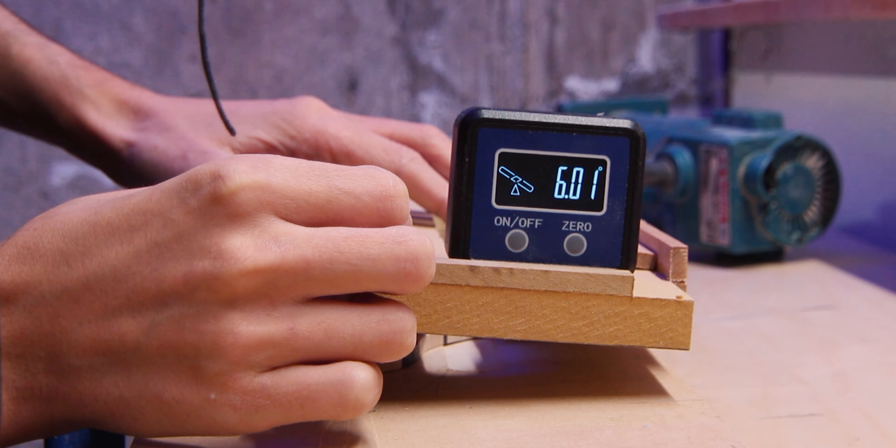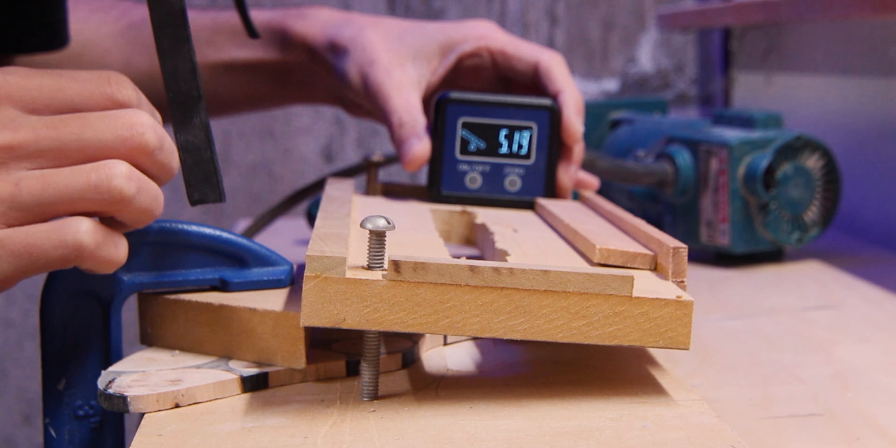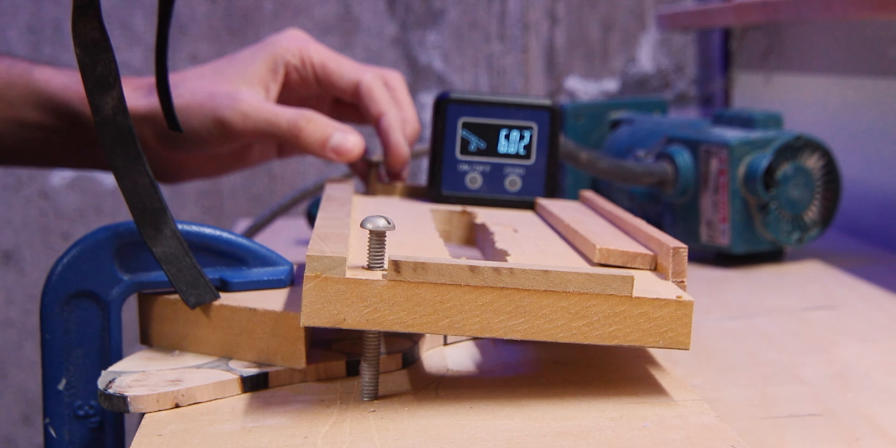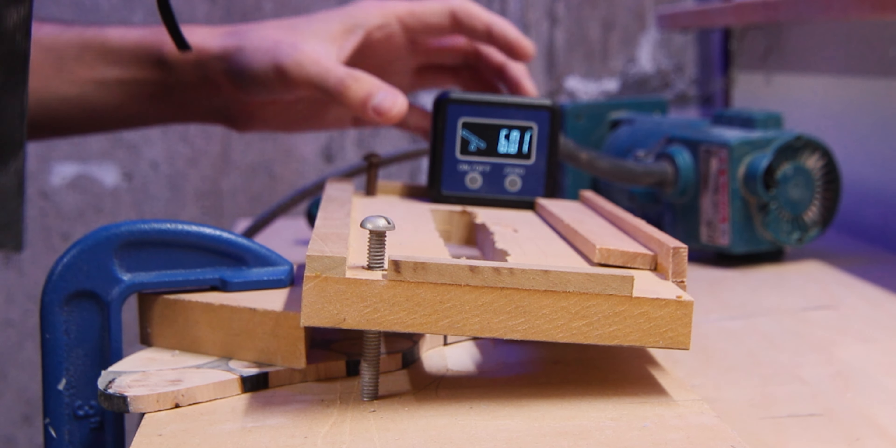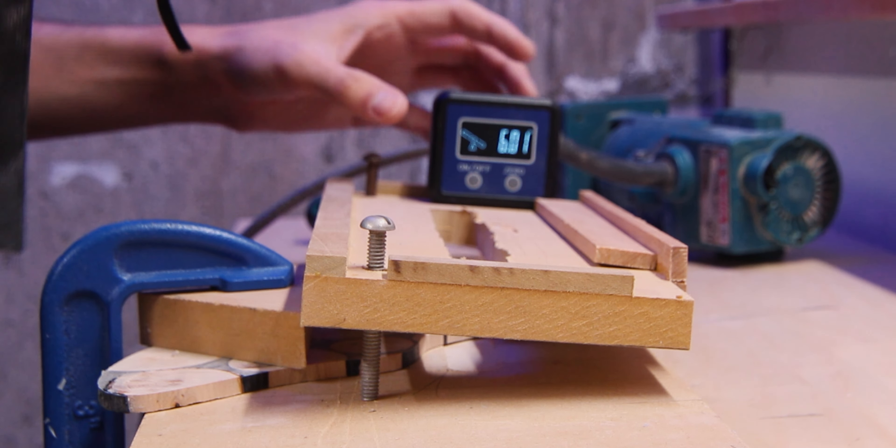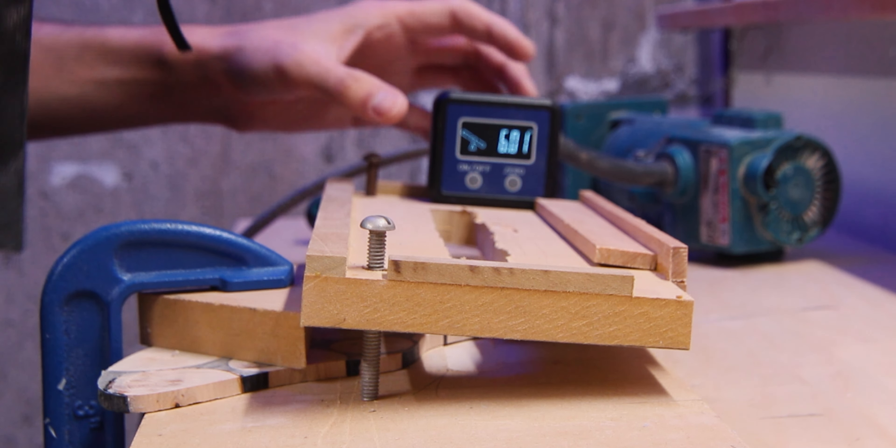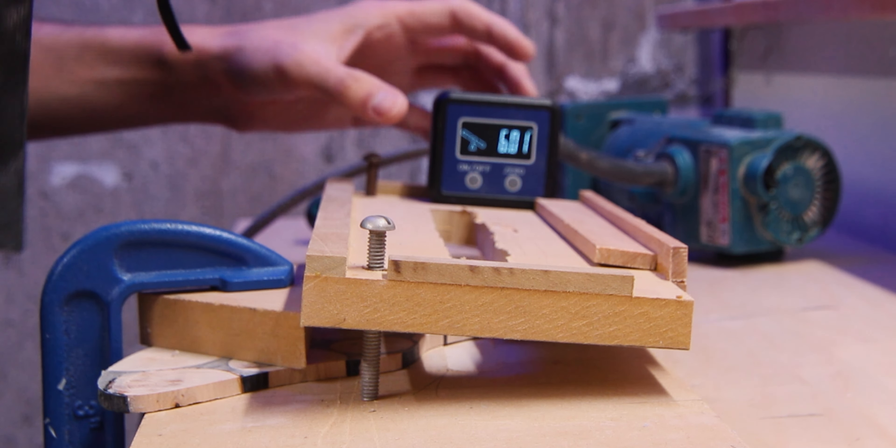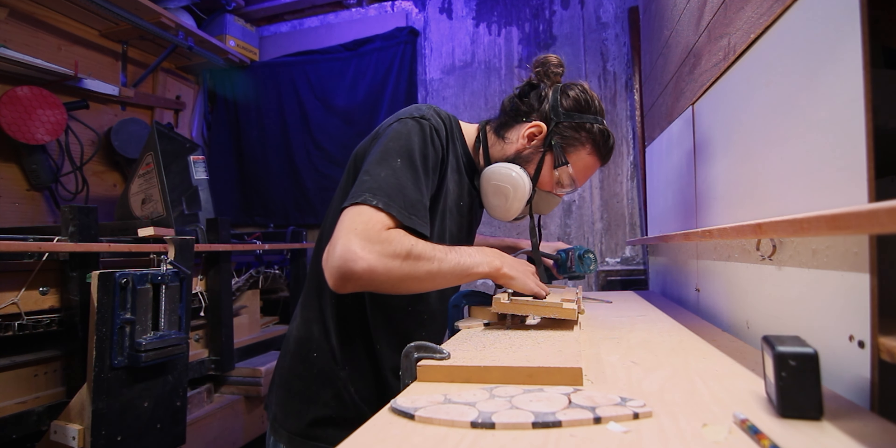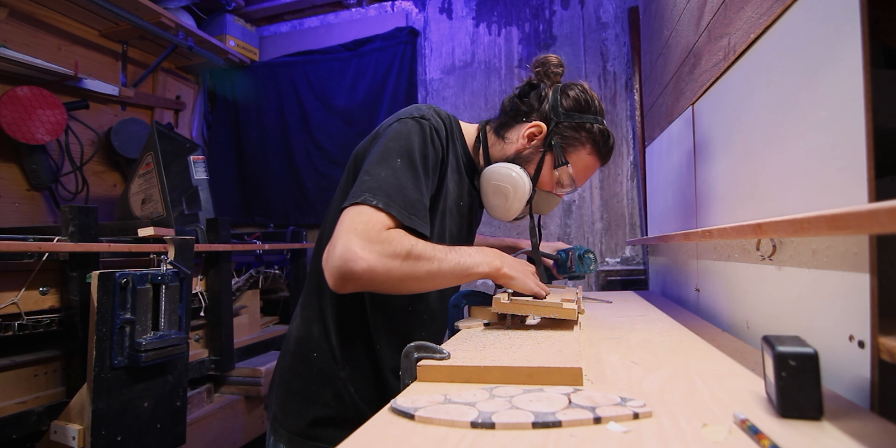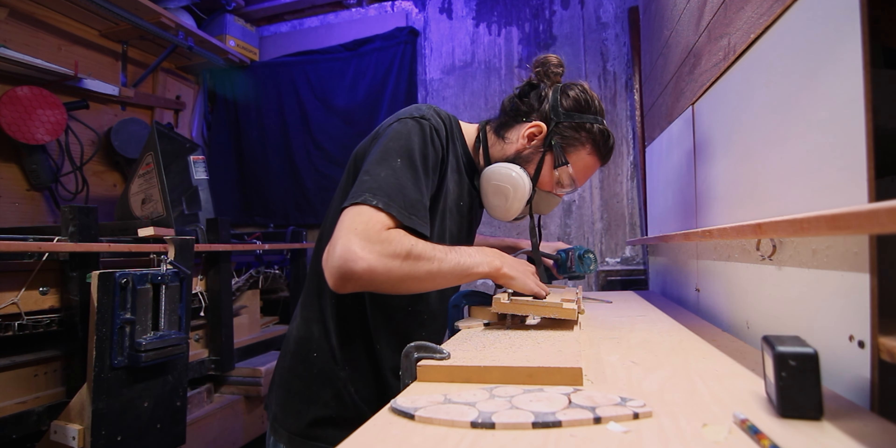For these fins, I want to add the cant before I glass them, so I'm going to use this new router jig I've been working on to set the cant. The nice thing about this jig is I can use the digital angle finder to precisely set the angle of the cant. For these keels, I'm going to go with more cant than I typically do, and on these ones I'm going to try out 6 degrees.